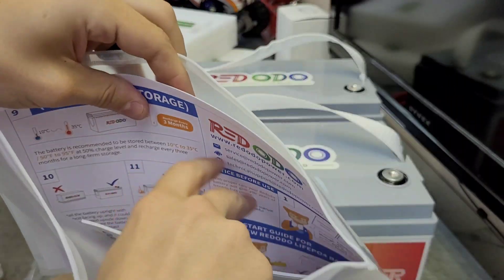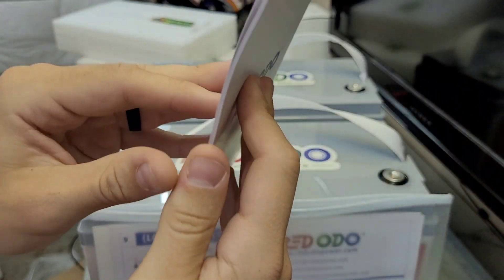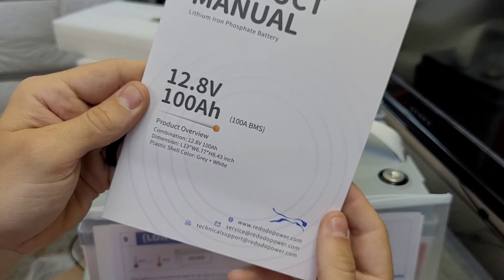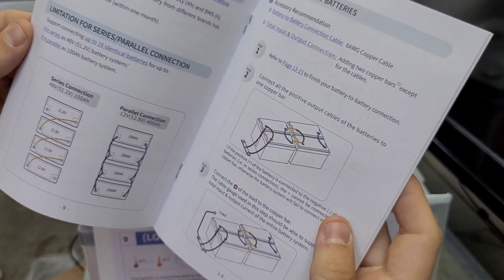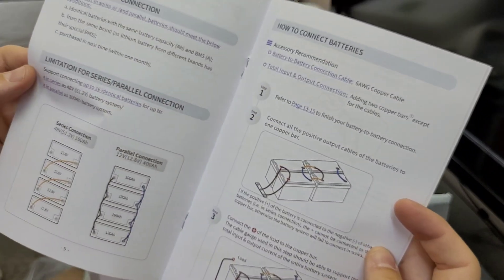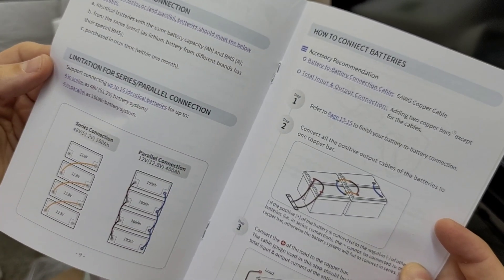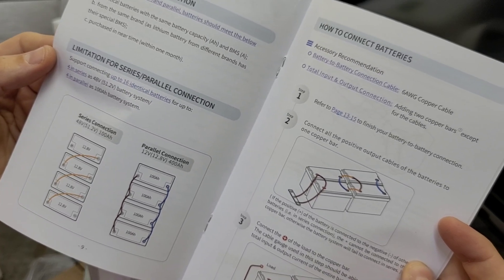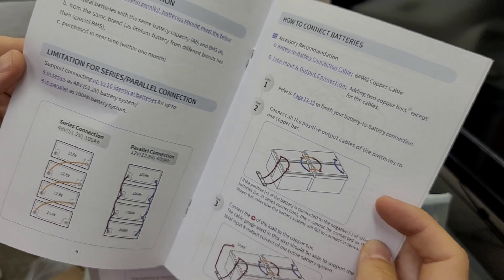All right, let's get that manual out, see what's included. Check the state of charge - they kind of estimate the state of charge based on the voltage. Obviously you need a shunt to really be accurate, but you can see you can do four in parallel, four in series, got a couple different configurations and recommendations here if you're not sure how to hook up batteries.